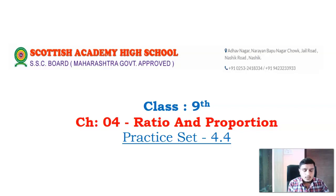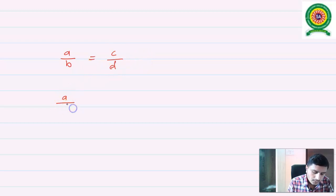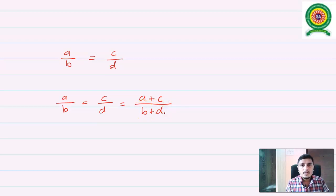Hello everyone. In this lecture we are going to discuss Class 9th Chapter 4, Ratio and Proportions, Practice Set 4.4. Before going to that, there is one topic: the theorem on equal ratio. If two ratios a/b and c/d are equal, then we can add up their numerators and denominators. So a/b = c/d = (a+c)/(b+d).